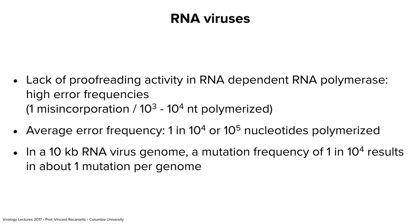The mutation rates of RNA and DNA viruses are very important concepts. All nucleic acid polymerases are error prone. RNA-dependent RNA polymerases have no proofreading activity, so they have higher error frequencies — one misincorporation per thousand or 10,000 nucleotides. A genome of 10 kb would have about one mutation per genome per replication cycle. DNA viruses are not as error prone because they have proofreading — they make less diversity and evolve slower than RNA viruses.